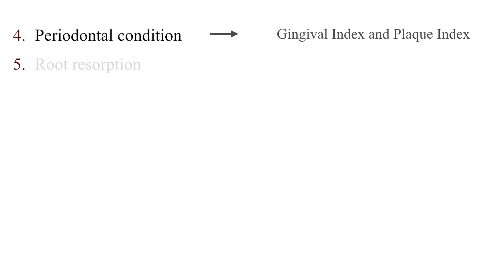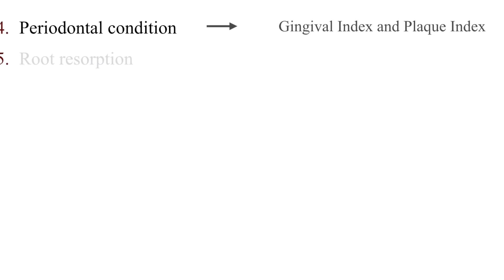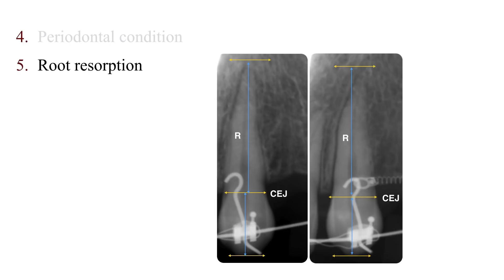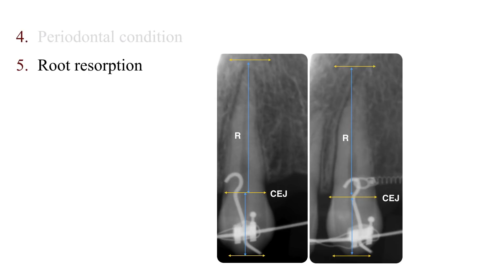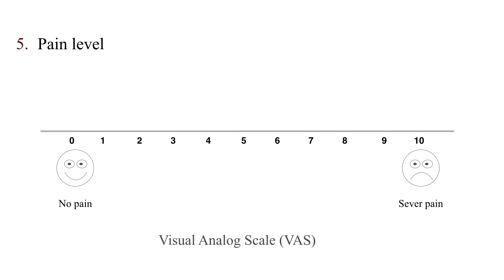The gingival index and plaque index were used to measure periodontal condition. Periapical X-rays were used to measure root resorption. A visual analog scale was used to measure pain level.